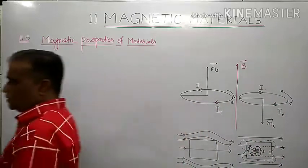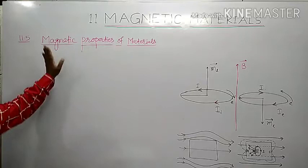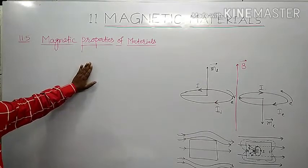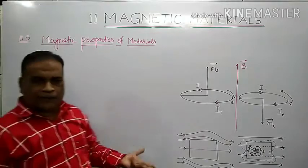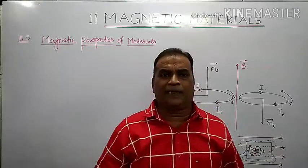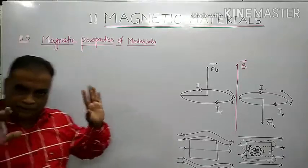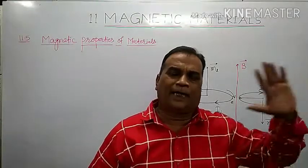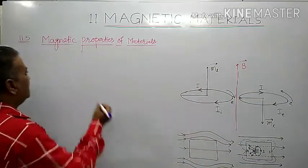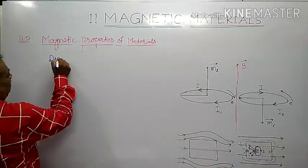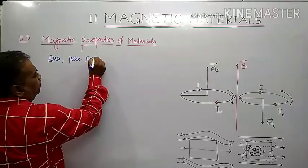Good morning students, this is our third lecture on Magnetic Materials. Today we are going to study the magnetic properties of material. Magnetic materials are classified depending upon their behavior whenever they are kept in an external magnetic field. They are classified into three categories: diamagnetic, paramagnetic, or ferromagnetic material.